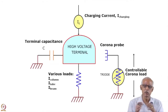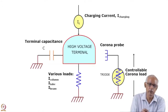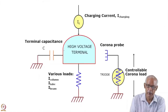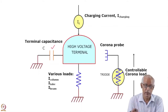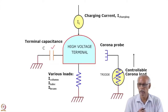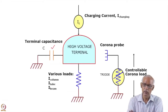Let us see what are the things involved and where the error could come in. For example, we are using first voltage generation, and that generation is coming because we are charging the capacitance. We are charging the capacitor, which is formed because of the high voltage terminal and the pressure vessel, represented by C here. Voltage is developed because of the charging current I-charging, which is flowing in.